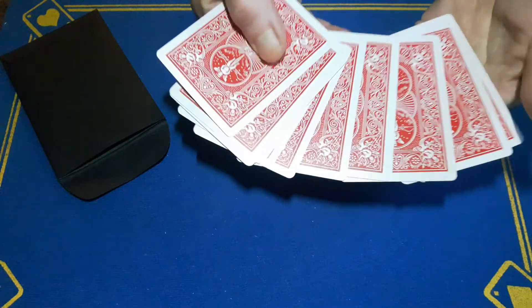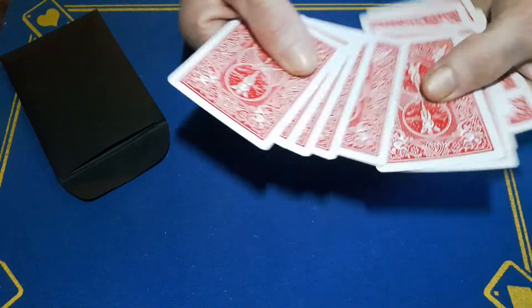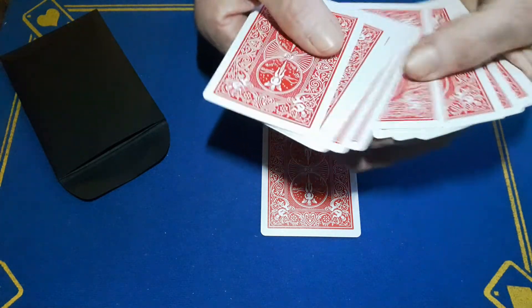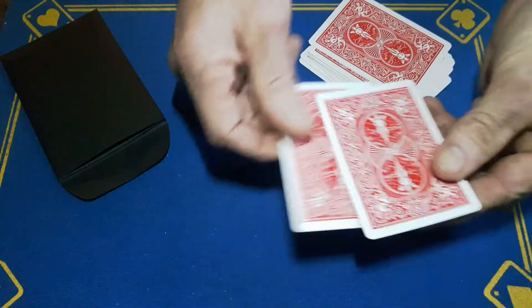When you're done shuffling, I want the spectator to point to any card they want. This one. We're going to give them another shuffle, point to any card, and we're going to isolate these two cards.